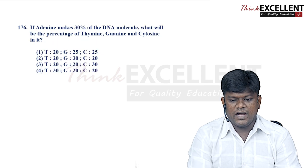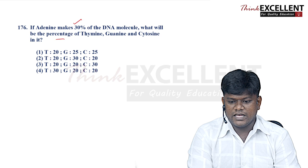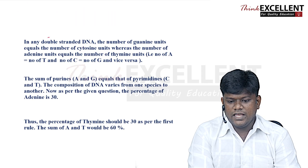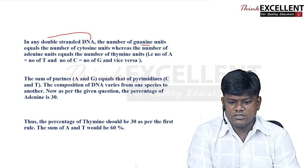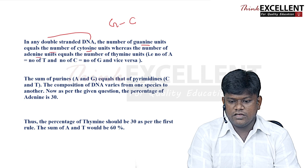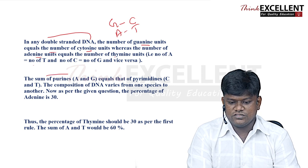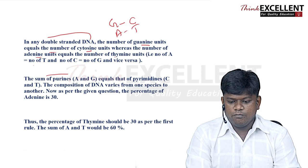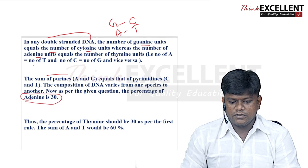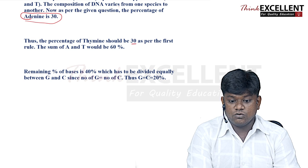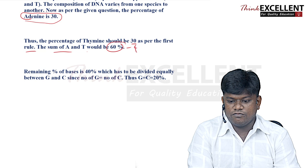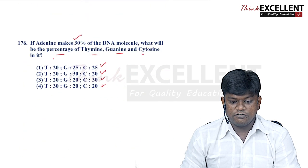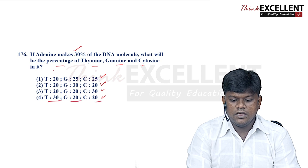Question 176: if adenine makes 30% of the DNA molecule, what will be the percentage of thymine, guanine, and cytosine? By Chargaff's rules: adenine equals thymine (A = T = 30%), and guanine equals cytosine. The remaining 40% is split equally: G = C = 20%. So option 4 — thymine 30%, guanine 20%, cytosine 20% — is the right answer.